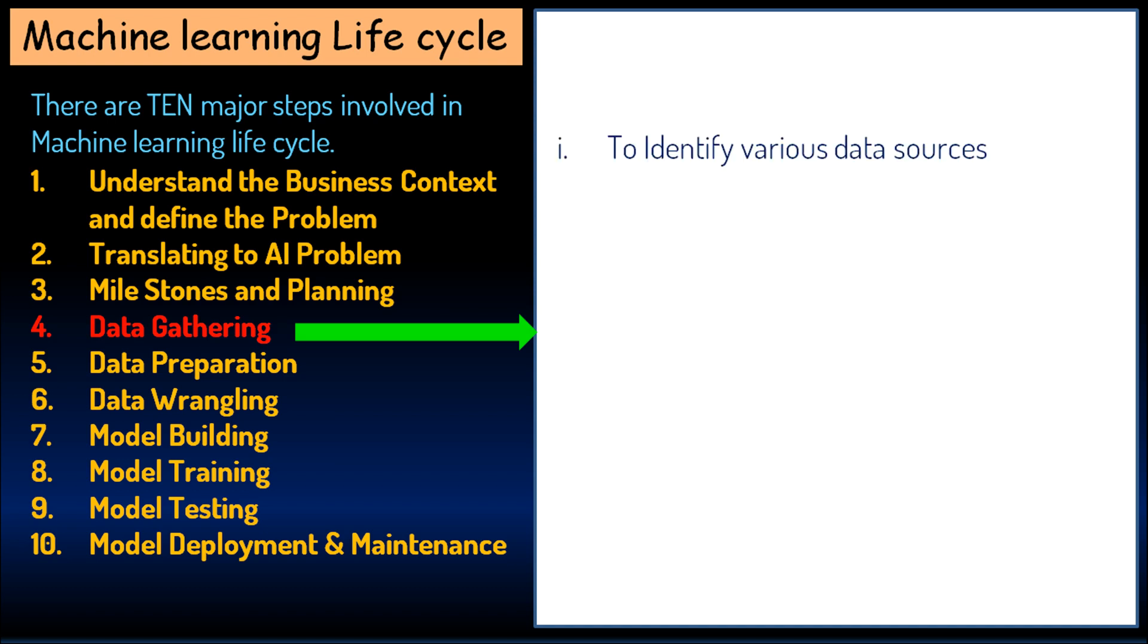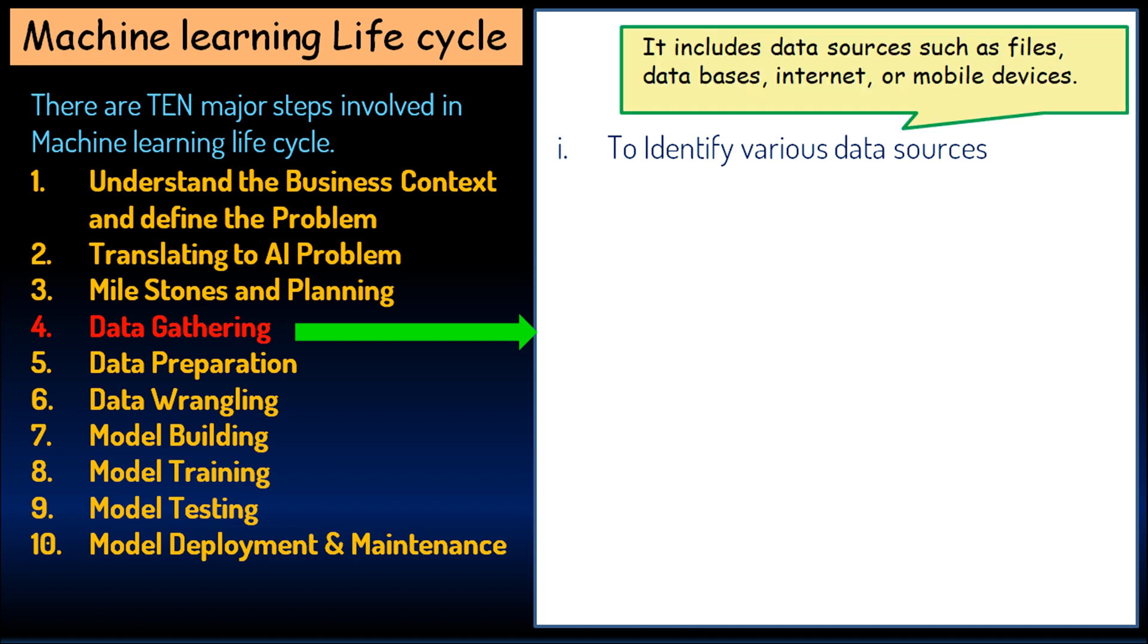The fourth step is data gathering. The aim of this step is to identify various data sources. It includes data sources such as files, databases, internet, or mobile devices.